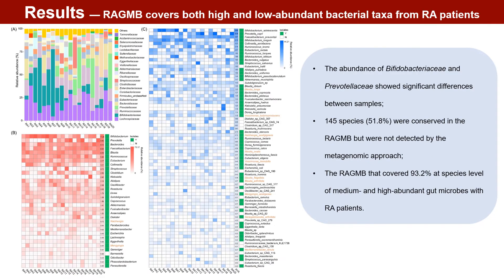In our study, we conducted metagenomic analysis on isolated samples to characterize the efficiency of culturing methods. We found that RAGMB significantly covered the medium to high abundance species in the gut of RA patients. Additionally, the use of modified methods improved the isolation rates of low abundance species.